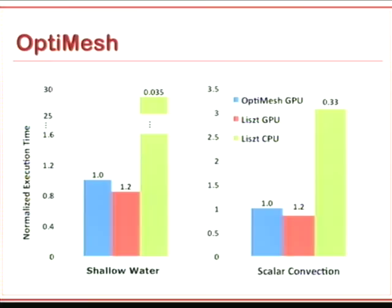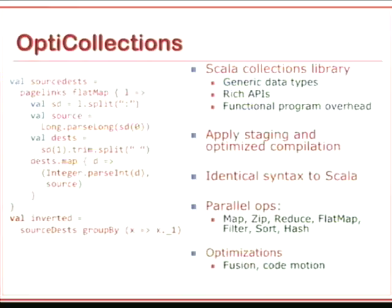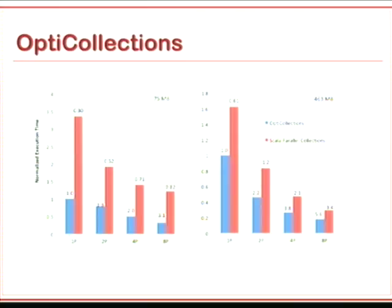The last example is a DSL which is not really a DSL — it's taking a subset of the Scala collections library and using staging and static compilation to optimize its performance. The code you start with is plain Scala, using the parallel ops we've defined — filter, reduce, flatMap, and so on — and the optimizations to optimize this code. Even though the library is already fairly optimized, you can get significant performance benefits from this approach.